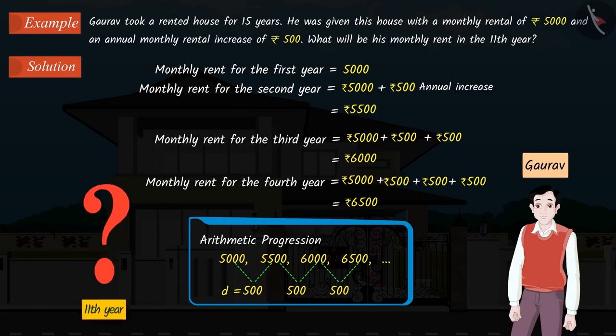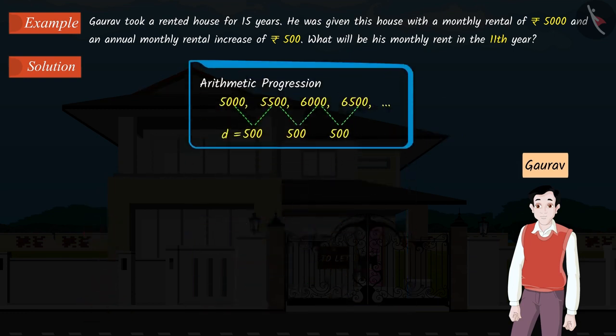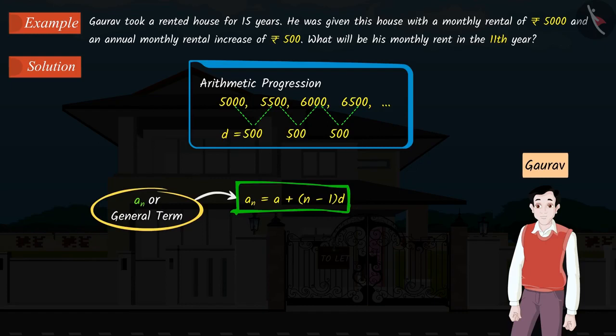We have to find the monthly rent for the 11th year. Now, tell me what will we do to find the value for the 11th year. Absolutely right! Now, we will use the formula for the nth term, AN or the general term of an AP.